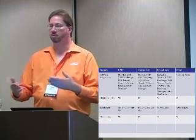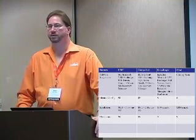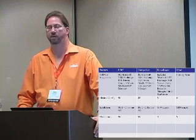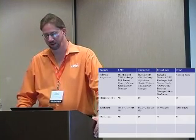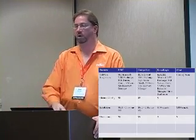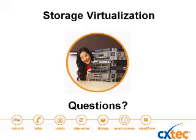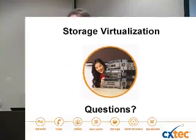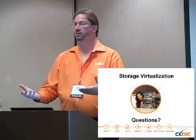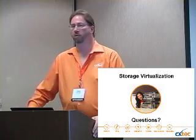Maintenance prices are also different between the arrays. You can get next-business-day service from EqualLogic for about $2,600. Compellent and EMC are substantially more. Hopefully this gave you a useful overview — there are a lot of different products out there, each with different features and significant differentiation between them. We can have a conversation about your environment, where you are today, where you want to go, and help choose the right product for you.